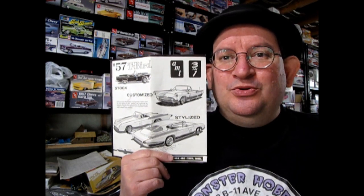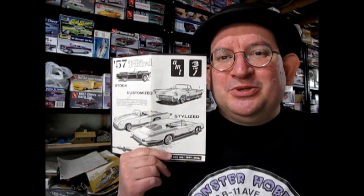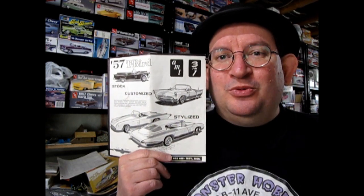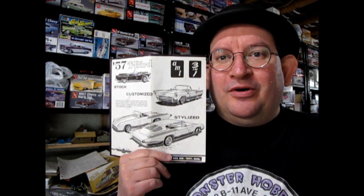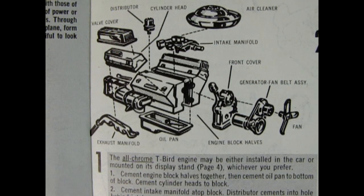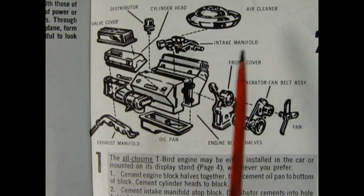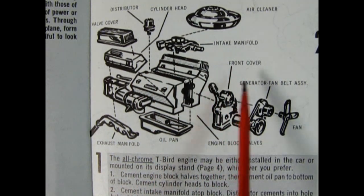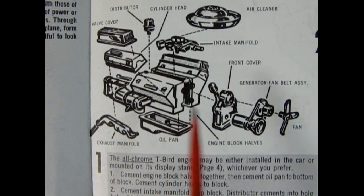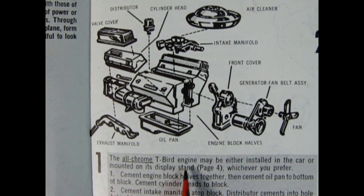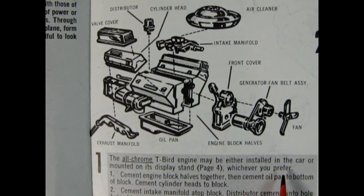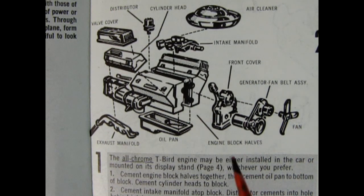I hope more people will join in as we go along. Today I'm going to work on that nice 312 Y-block Ford motor. Here we have the original instruction sheet for the Styline '57 Ford Thunderbird. This engine is all chrome plated. It does say the all-chrome T-bird engine may be either installed in the car or mounted on the display stand on page four, whichever you prefer.